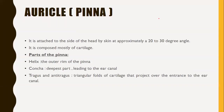The first part of the external ear is the auricle, also called the pinna. It is attached to the side of the head by skin at approximately a 20 to 30 degree angle and is composed mostly of cartilage. The main parts included in the auricle are: the helix, which is the outer rim of the pinna; the concave, which is the deepest part leading to the ear canal; and the tragus and antitragus, which are triangular folds of cartilage projecting over the entrance to the ear canal.